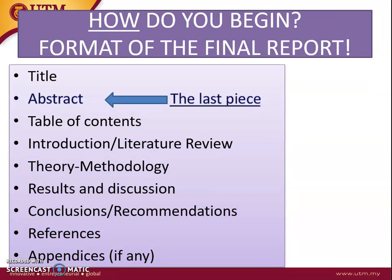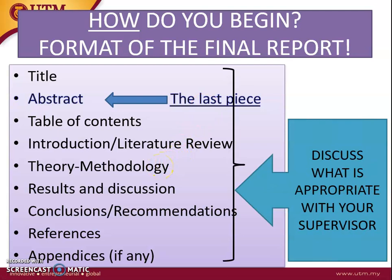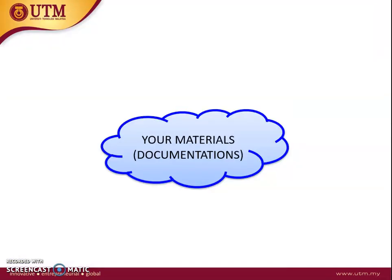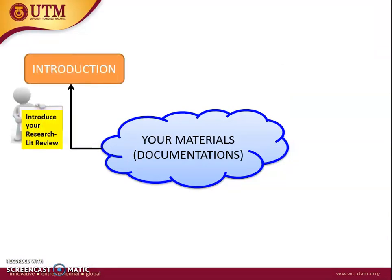So how do you begin? You should have separated your material into introduction, literature review, theory and methodology, results and discussion, conclusions, and recommendations. The abstract is the last piece of information you write. Discuss what is appropriate with your supervisor. You have all your materials and documentation from FYP1 and FYP2. You may need to modify, edit, and extend what you have written in your FYP1 draft, which includes the background and literature review.